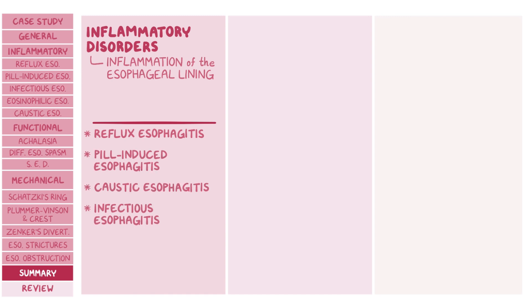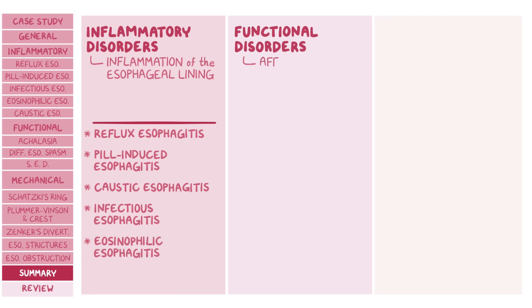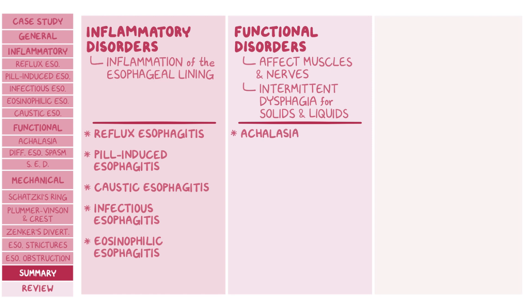As a quick recap: inflammatory esophageal disorders, also known as esophagitis, are characterized by inflammation of the esophageal lining and include reflux esophagitis, pill-induced esophagitis, caustic esophagitis, infectious esophagitis, and eosinophilic esophagitis. Functional esophageal disorders affect the muscles and nerves controlling esophageal motility and typically cause intermittent dysphagia for solids and liquids. Achalasia is associated with impaired esophageal motility and inability to relax the lower esophageal sphincter, most commonly caused by idiopathic degeneration of the postganglionic inhibitory neurons in the myenteric plexus of the esophagus.